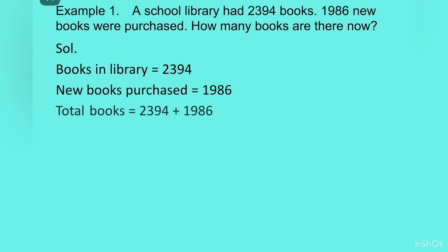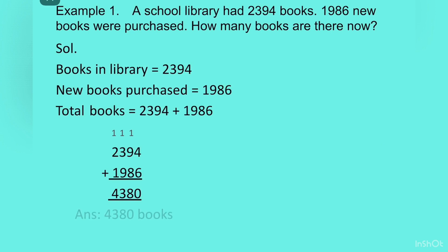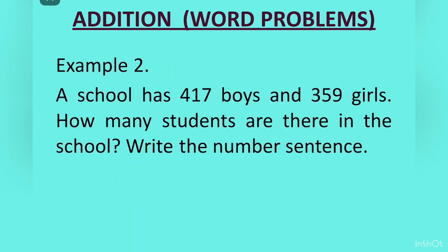Therefore, we will write: total books is equal to 2394 plus 1986. In the next step, we will write the numbers one below the other and add them. When you add, you will get the answer as 4380. We will write: answer 4380 books.